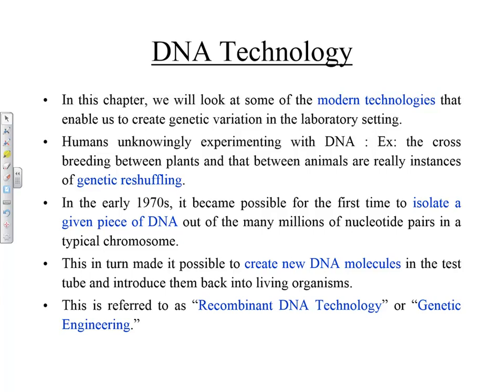It is a fact that humans have been unknowingly experimenting with DNA — for example, the cross-breeding between plants. People have been doing that for a long time, and at the beginning of the last century, Mendel actually did the breeding of pea plants. He didn't know anything about chromosomes and two copies of each chromosome, but he had all that stuff figured out. Cross-breeding between plants and animals are instances of genetic reshuffling.